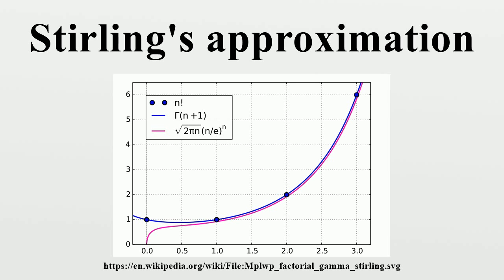Speed of convergence and error estimates: Stirling's formula is in fact the first approximation to the following series. An explicit formula for the coefficients in this series was given by G. Nemes. The first graph in this section shows the relative error versus n for one through all five terms listed above. As n approaches infinity, the error in the truncated series is asymptotically equal to the first omitted term. This is an example of an asymptotic expansion. It is not a convergent series for any particular value of n. There are only so many terms of the series that improve accuracy, after which point accuracy actually gets worse.